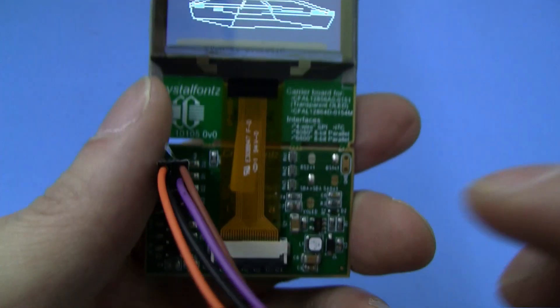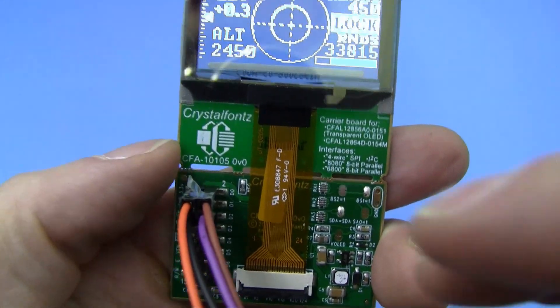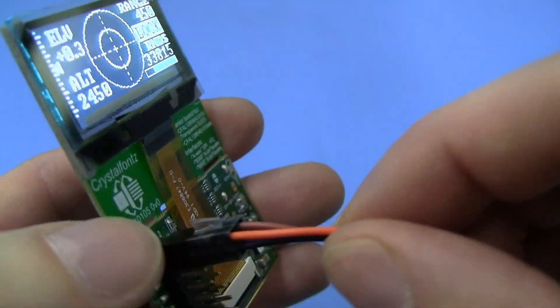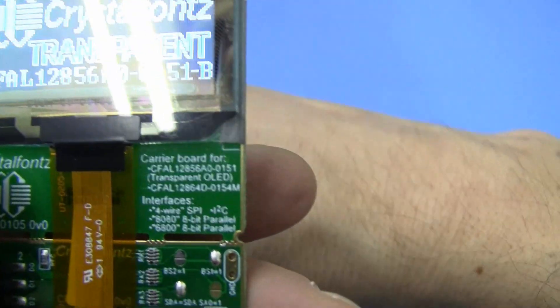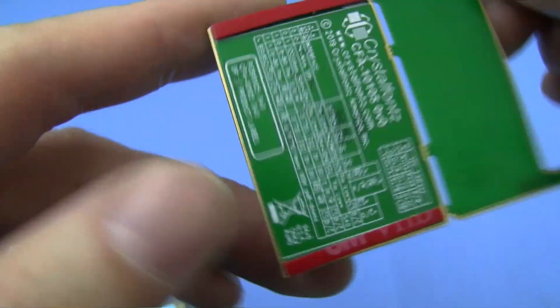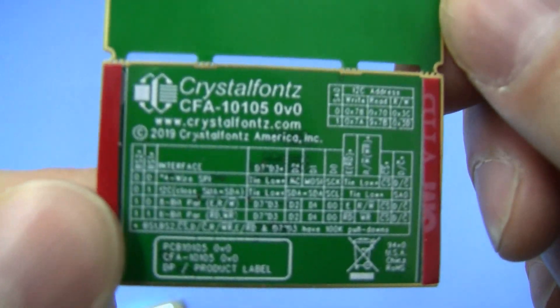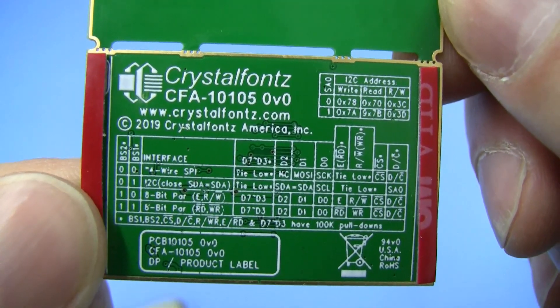As you can see here we have this one set up for SPI so we're running our four SPI wires and then we have it jumped accordingly. There's a table on the back of the board which shows you how to configure each of those jumper settings.